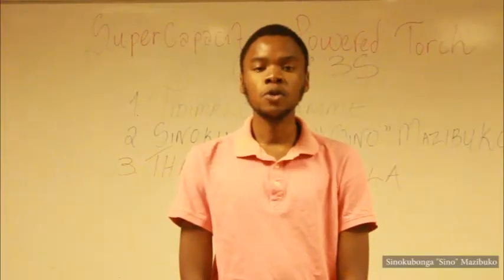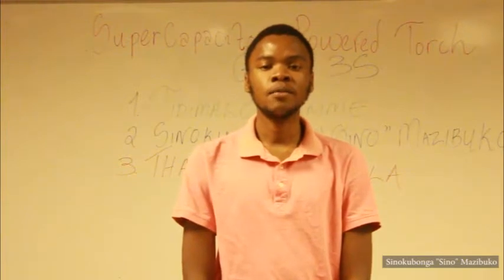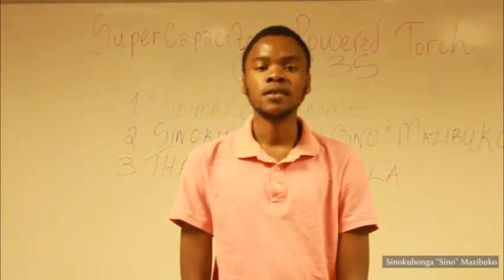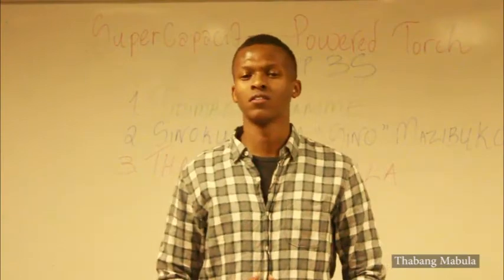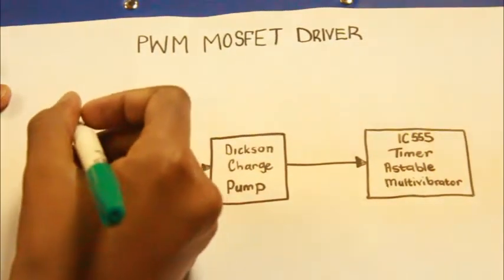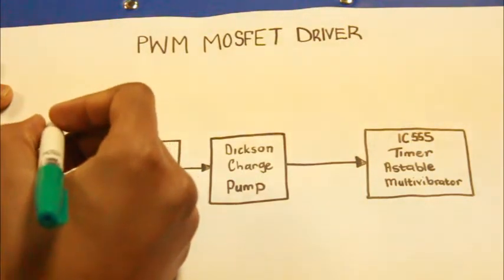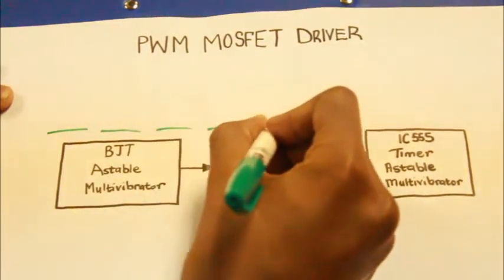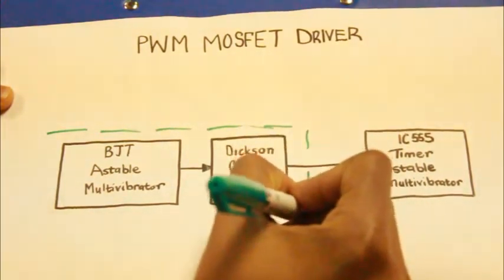The MOSFET in the boost converter is driven by the PWM MOSFET driver. The PWM MOSFET driver is the part of the circuit responsible for the switching characteristics of the boost converter. First, a bootstrap power supply is used to step up the voltage from the supercapacitor so that it's able to power the next stage of the subsystem.